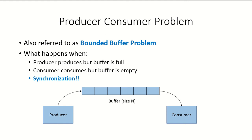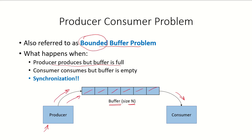In this video we are going to discuss semaphores, but before we go into the concepts of semaphores, let us discuss the producer-consumer problem, also referred to as the bounded buffer problem. We have a producer producing items and putting them into a buffer of some fixed size n — that is why it is referred to as a bounded buffer. From this buffer the consumer will consume the items. Problems arise if the buffer is full while the producer keeps producing, or if the buffer is empty while the consumer tries to consume.